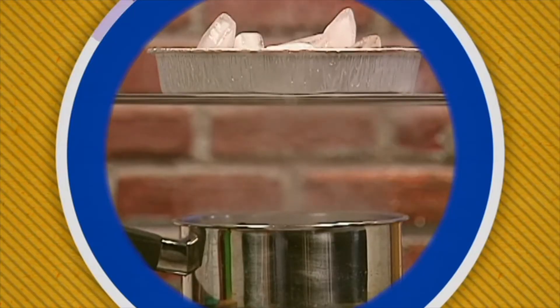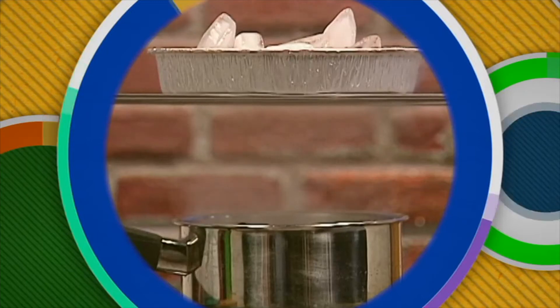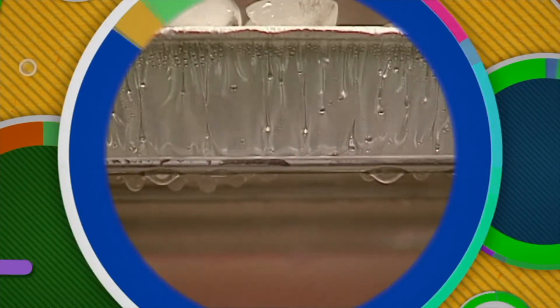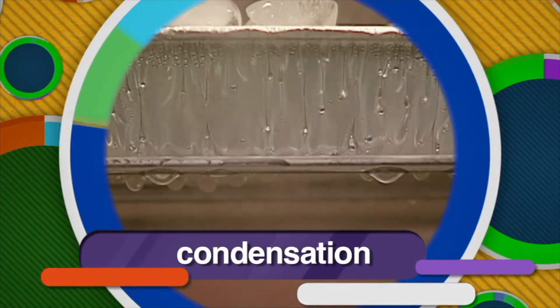Gas can change back to a liquid too. We can demonstrate that by using a metal pie plate filled with ice. The water vapor cools when it hits the metal and changes back to a liquid — this process is known as condensation. Condensation is the process by which a gas turns into a liquid. On a hot day, water droplets will form on a glass of cold lemonade. That's because the cold glass cools some of the water vapor in the air, causing it to change to a liquid state. That's condensation too.